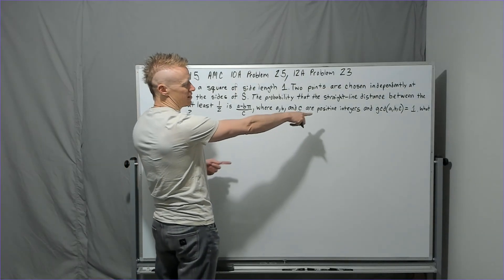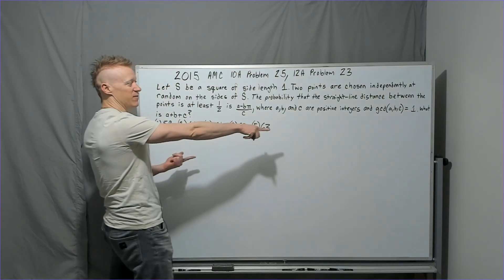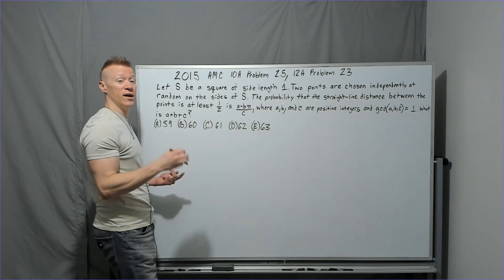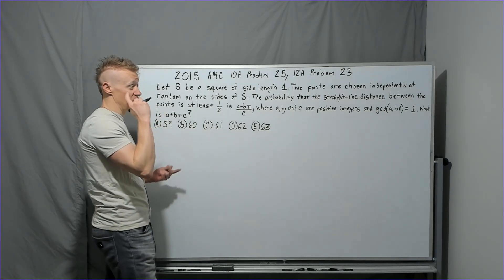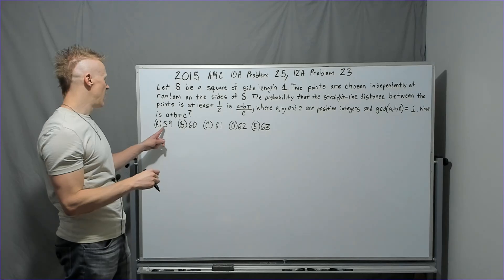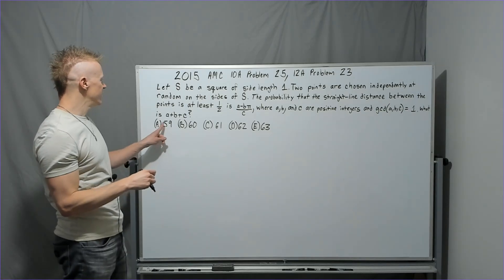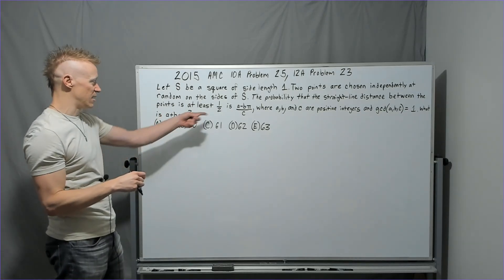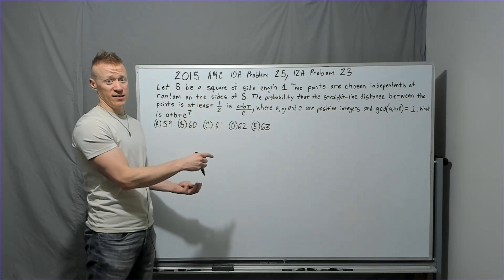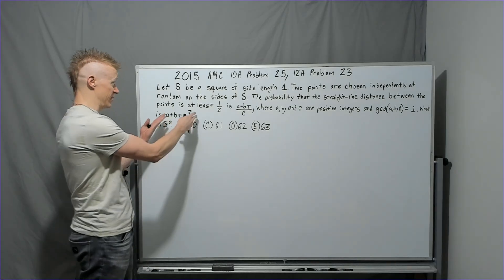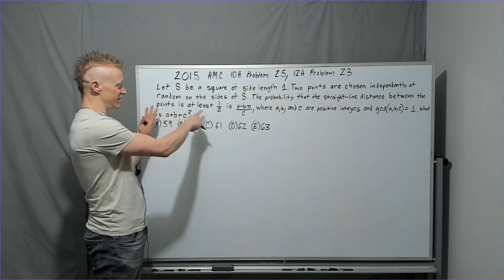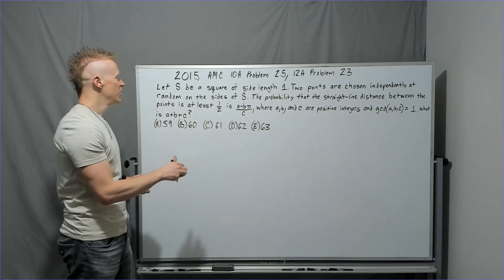The answer is expressed as (a − bπ)/c, where a, b, and c are positive integers and the greatest common divisor of them is one — meaning no common divisors other than one. What is the sum of the values a + b + c? Basically, find the probability that the distance between the points is at least one half.